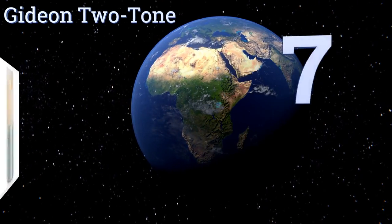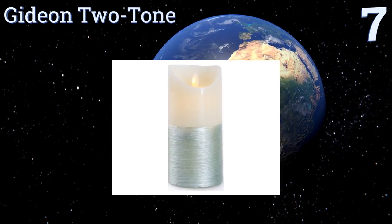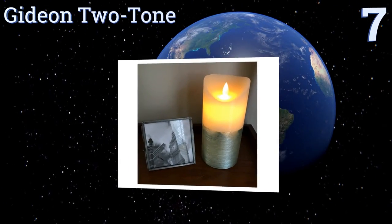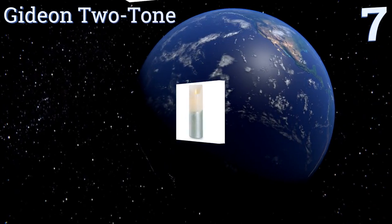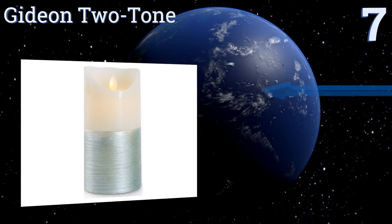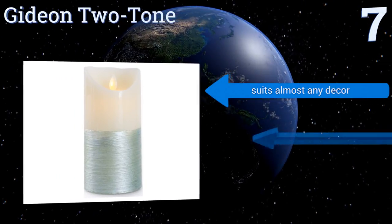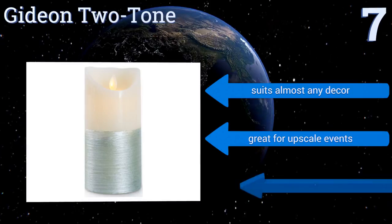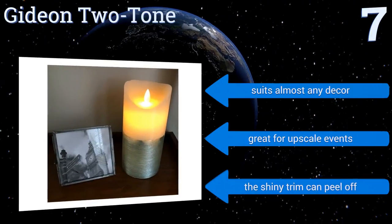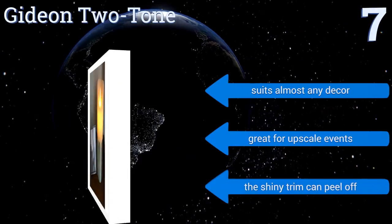At number seven, the elegant Gideon Two-Tone makes a nice housewarming gift with its calming vanilla scent and edgy design. It's a rather large candle that can easily be the centerpiece of your dinner party or the light by which you read at night. It suits almost any decor and is great for upscale events, but the shiny trim can peel off.